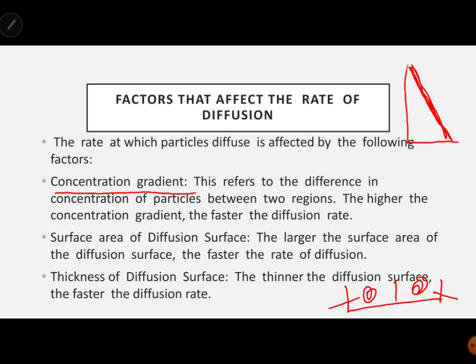The second factor is the surface area of the diffusion surface. The larger the surface area, the faster the rate of diffusion. On the other hand, when the surface area is small, there is a low rate of diffusion.